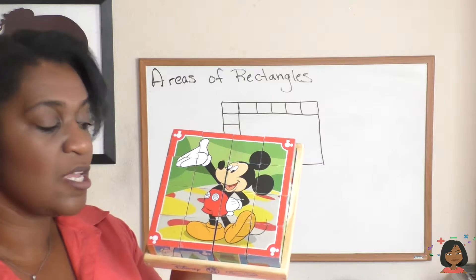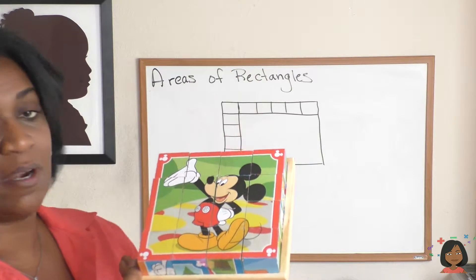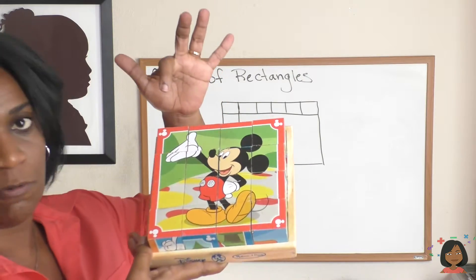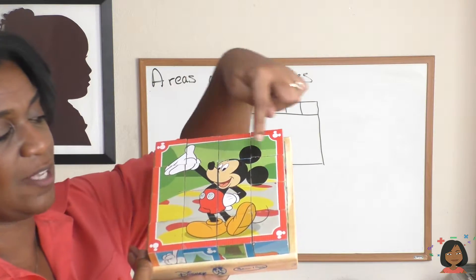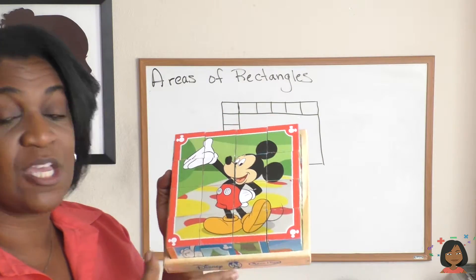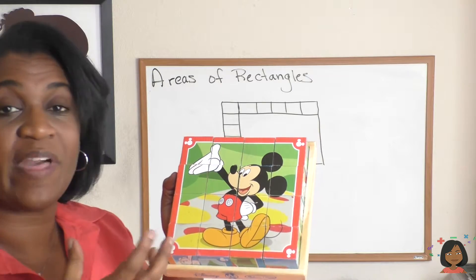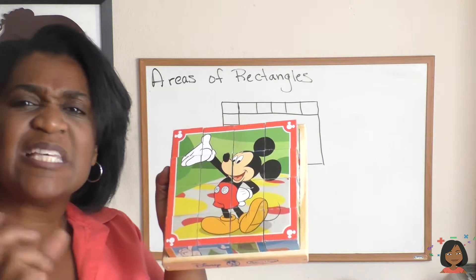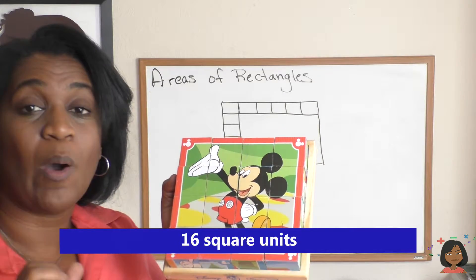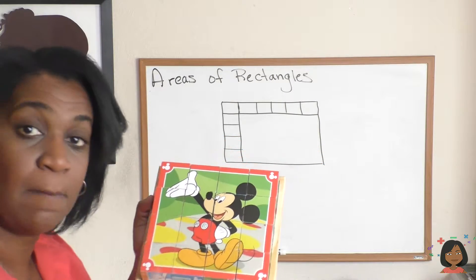We divide them into equal blocks. I have one block here and another here, and if I counted them all up: one, two, three, four, five, six, seven, eight, nine, ten, eleven, twelve, thirteen, fourteen, fifteen, sixteen blocks. They're square, so we would call the area of this Mickey Mouse thing sixteen square units.